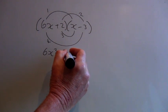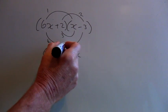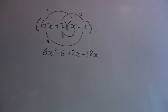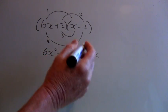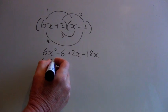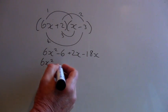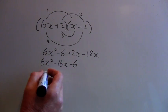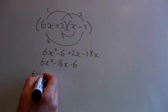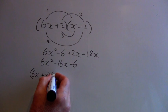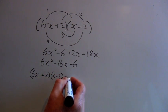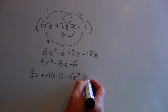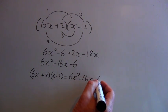2 times x gives you plus 2x, and 6x times minus 3 gives you minus 18x. Collecting the like terms we have 6x squared plus 2x minus 18x, which leaves you with minus 16x and minus 6. So we can write 6x plus 2 times x minus 3 equals 6x squared minus 16x minus 6.